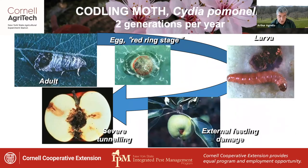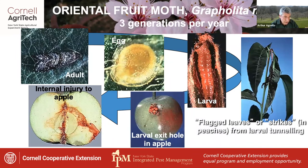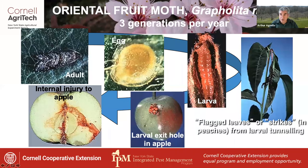Oriental fruit moth is a member of the tortricid family. It's a very important insect with at least three generations per year — sometimes even four during long, hot seasons, particularly in the Hudson Valley. The adult is a mottled dark gray moth that starts to fly in late April or early May, during the late pink to early bloom stage. The female lays single eggs on the upper surface of leaf shoots. First generation larvae feed on foliage, often entering the terminal at the base of a young leaf and tunneling toward the base of the shoot, causing leaves to wilt and die back — producing flagged leaves especially common in peaches. Later broods concentrate on developing fruits, feeding on internal tissue and leaving messy frass around their entry hole.